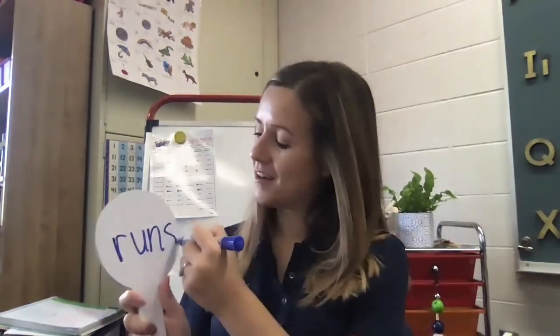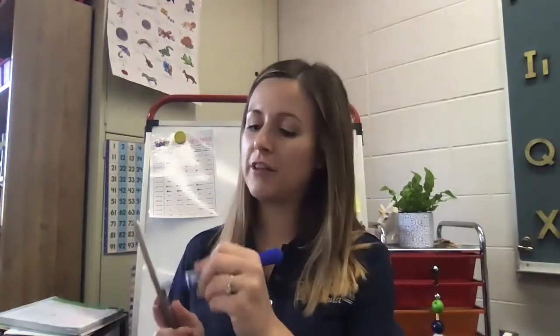Here's another one. I run on the playground. But if I want to talk about somebody else, I need to add that letter S. I could say Gift runs on the playground. Let's try one more. I tap my foot to the beat. Or I could say Riley taps her foot to the beat. When I talk about these verbs — things that people do — I need to add the S if I'm talking about somebody else.